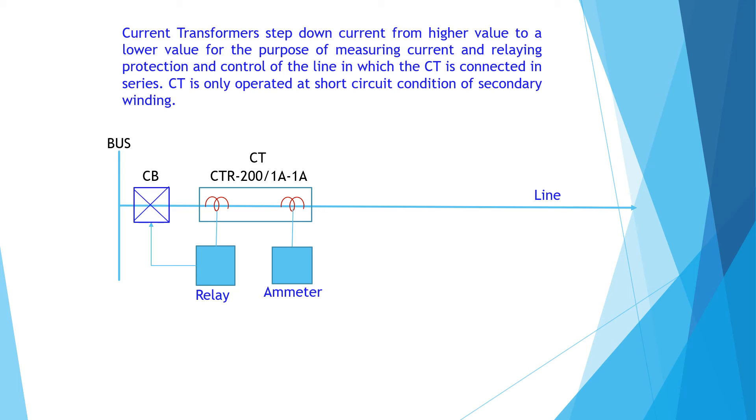Current ratios being used at present are like 200 by 1 ampere, 300 by 1 ampere, 400 by 1 ampere, 600 by 1 ampere, 1200 by 1 ampere, 1600 by 1 ampere, even 2000 by 1 ampere, etc.